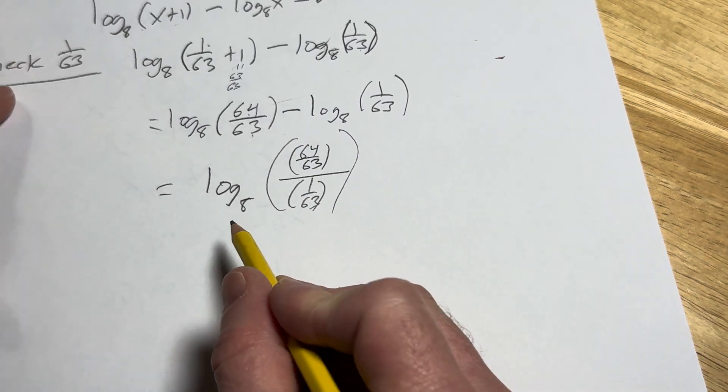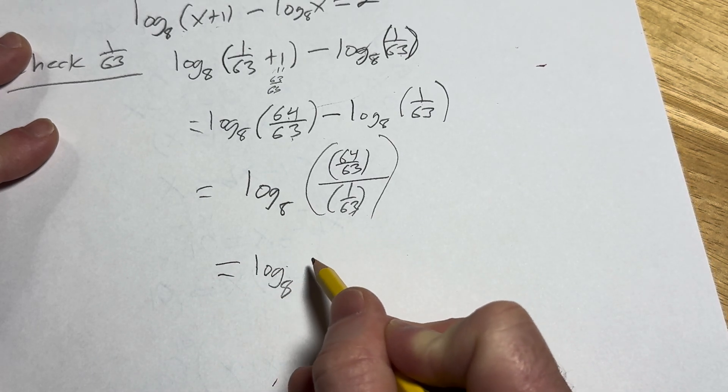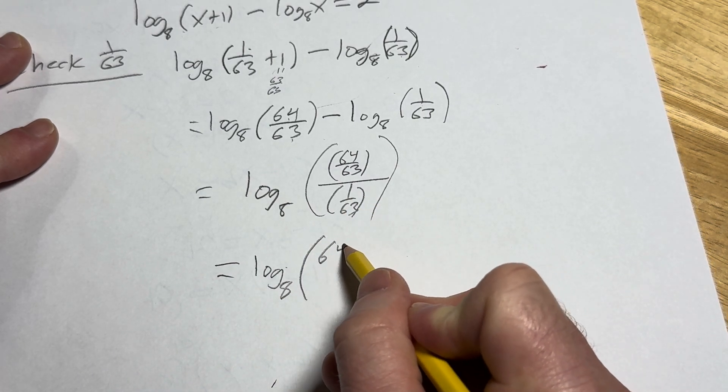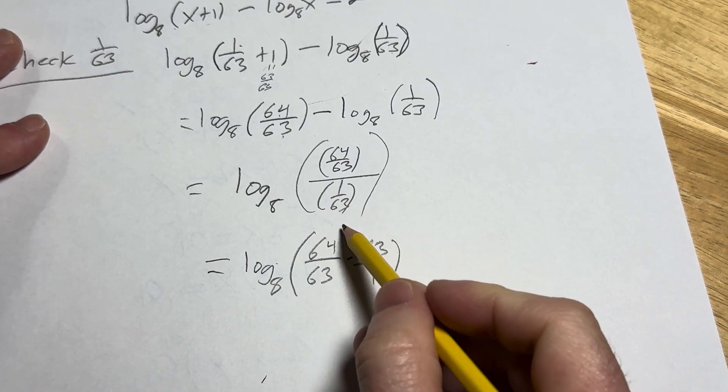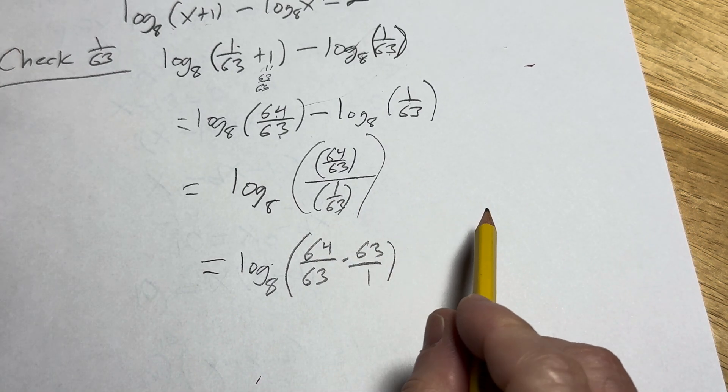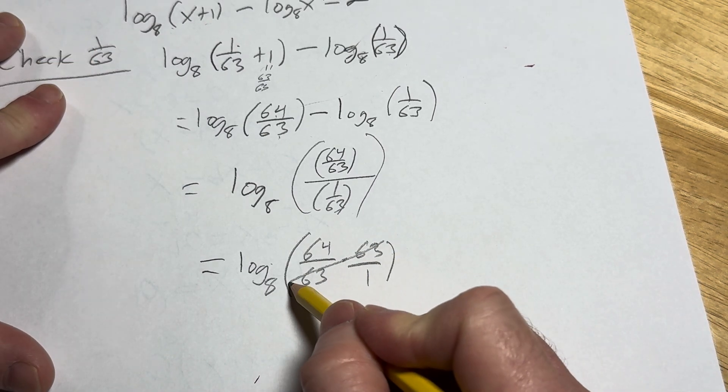When you divide, you multiply by the reciprocal, right? So this is log base 8 of 64 over 63 times 63 over 1, right? Because dividing by 1 over 63 is the same thing as multiplying by 63 over 1. These cancel.